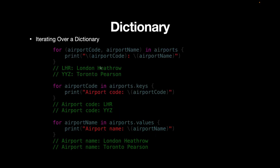To iterate over a dictionary, it's similar to Array or Set, but you get both key and value. For example: for (airportCode, airportName) in airports — you can then print both the code and name. If you only want keys, use airports.keys in your for loop. If you only want values, use airports.values. This is how you iterate over a dictionary.